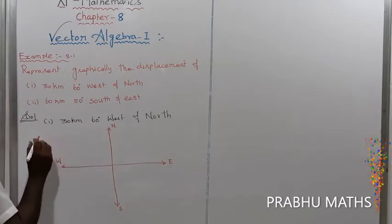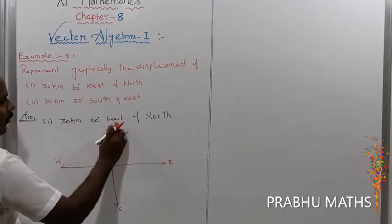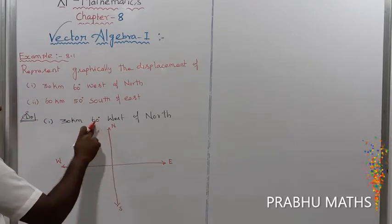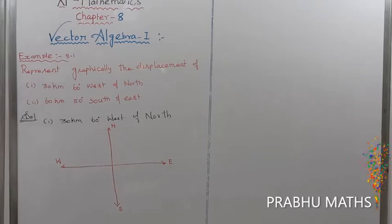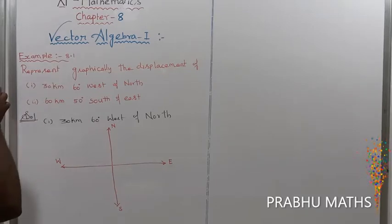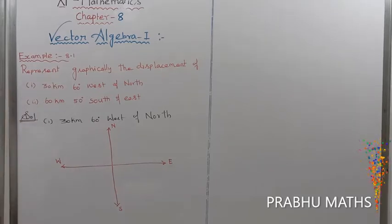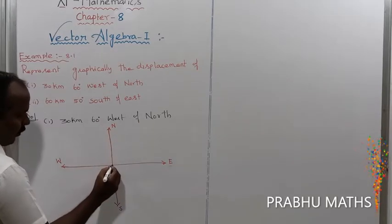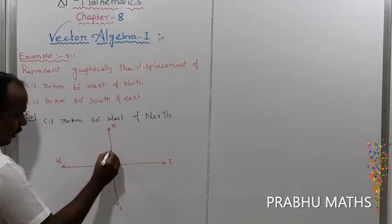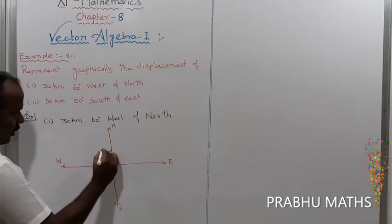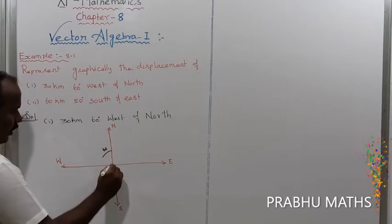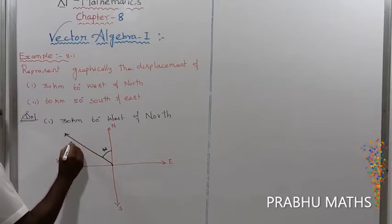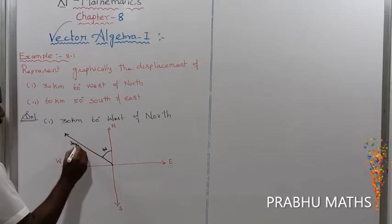The first displacement is west of north — from north toward west, 60 degrees. So that angle is 60 degrees, and the distance is 30 km. This represents the first displacement vector.